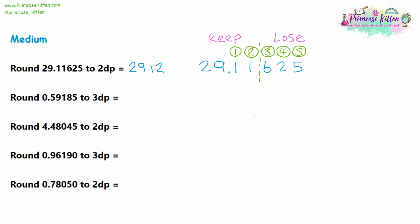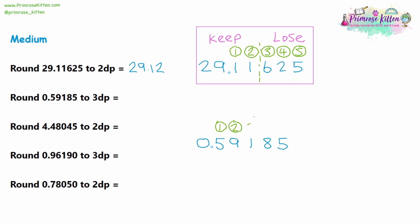Question two: 0.59185. Label the decimal places — first, second, third, fourth, and fifth. We're rounding to three decimal places, so rule off after the third decimal place. Keeping 0.591 and losing the 8 and 5. Before writing the answer, check if we're rounding up — the first number we're losing is an 8, so we are rounding up. The answer is 0.592.